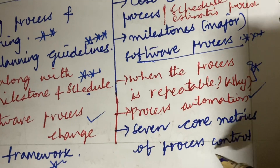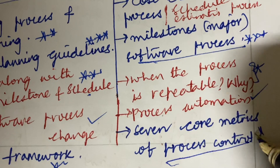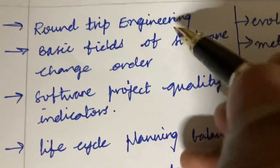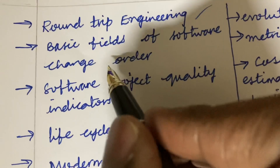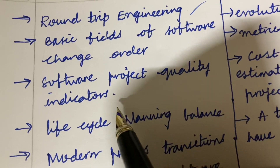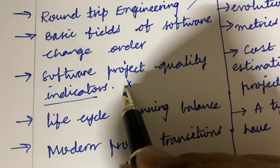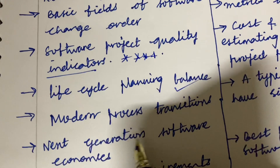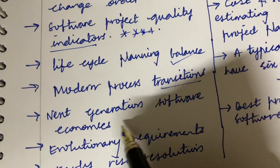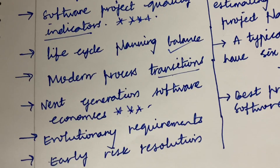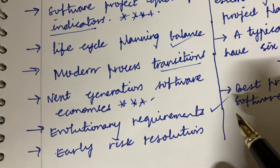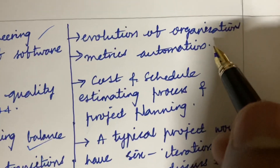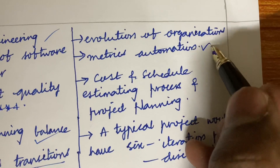Process automation and seven core metrics — metrics of process control — is said to be a top most question likely to appear this time. Roundtrip engineering define is a three-mark question. Basic fields of software change order and software project quality indicators are said to be top most gunshot questions. Life cycle planning balance, modern process transitions, and next generation software economics are also top most questions. Evolutionary requirements is a three-mark question, early risk resolution is a two or three-mark question, and evolution of organization and matrices automation is a two or three-mark question.